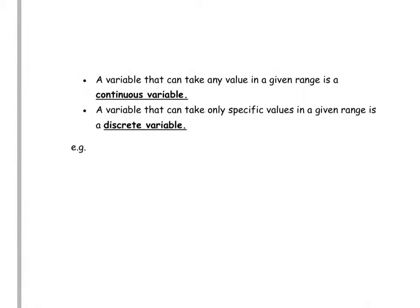Discrete variables are things which take specific values — for example, the number of 10 pences in a bag or the number of balls in a bag. So there are several things to consider when talking about data: whether it's qualitative or quantitative, or whether it's continuous or discrete.